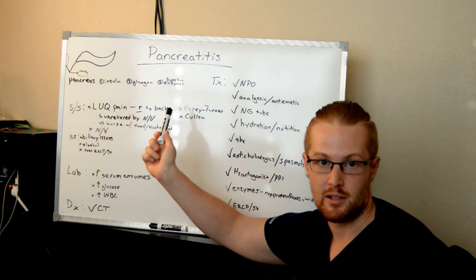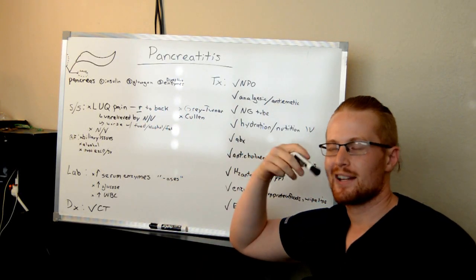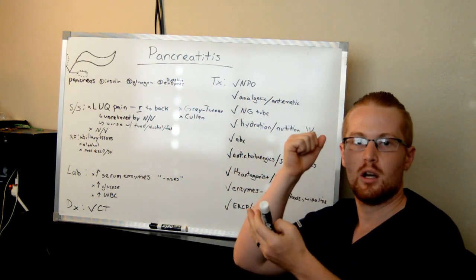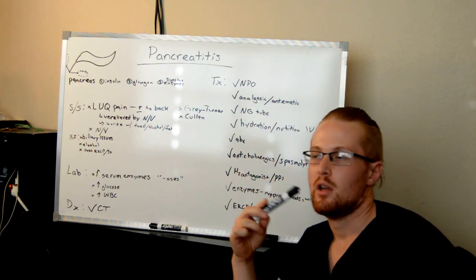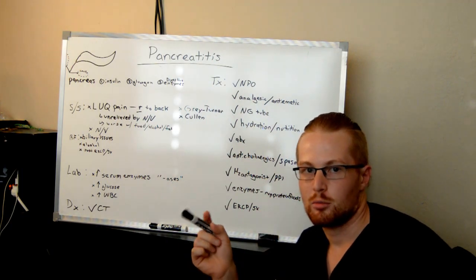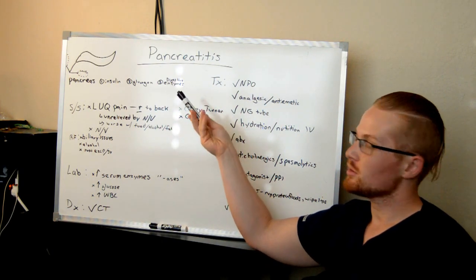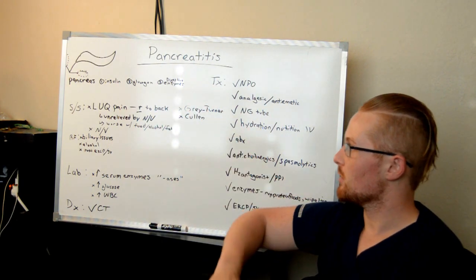Alright, let's dive into pancreatitis. When I'm talking about pancreatitis, most of this will refer to acute, meaning temporary, sudden pancreatitis. Chronic pancreatitis will be more so the same, just recurrent. So let's just pretend we're talking about acute pancreatitis here.